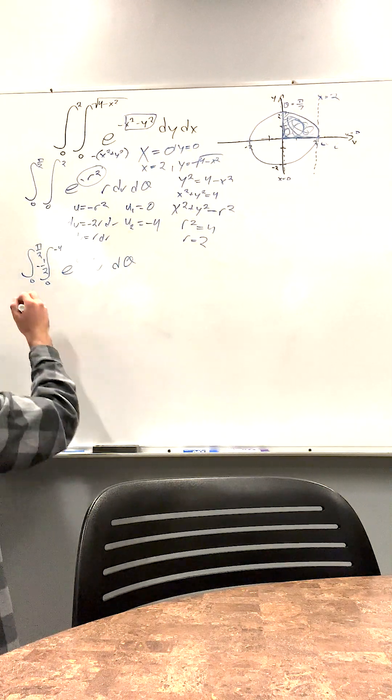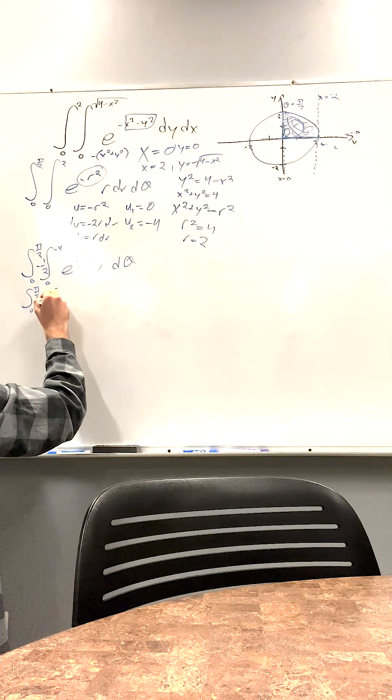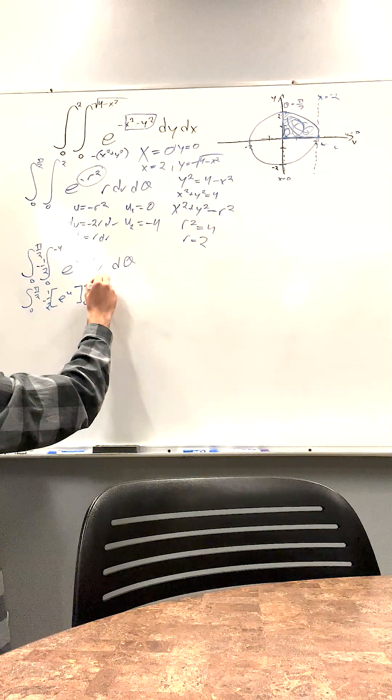d theta. Now this is pretty easy. 0 to pi over 2, negative 1 half, e to the u, 0 to negative 4, d theta.